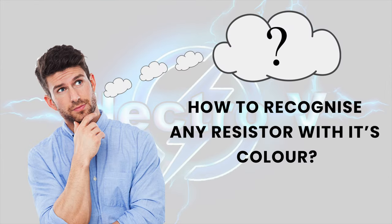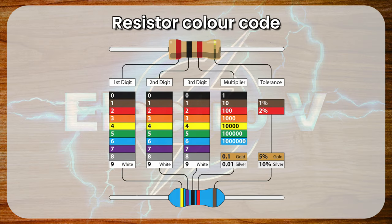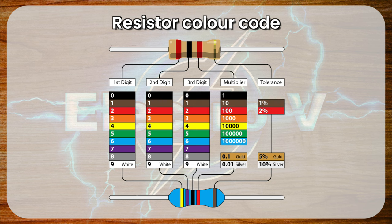Fifth, how to recognize any resistor with its color? Resistor color code: resistors are color coded to indicate their resistance value and tolerance. The code consists of several colored bands printed on the resistor's body.